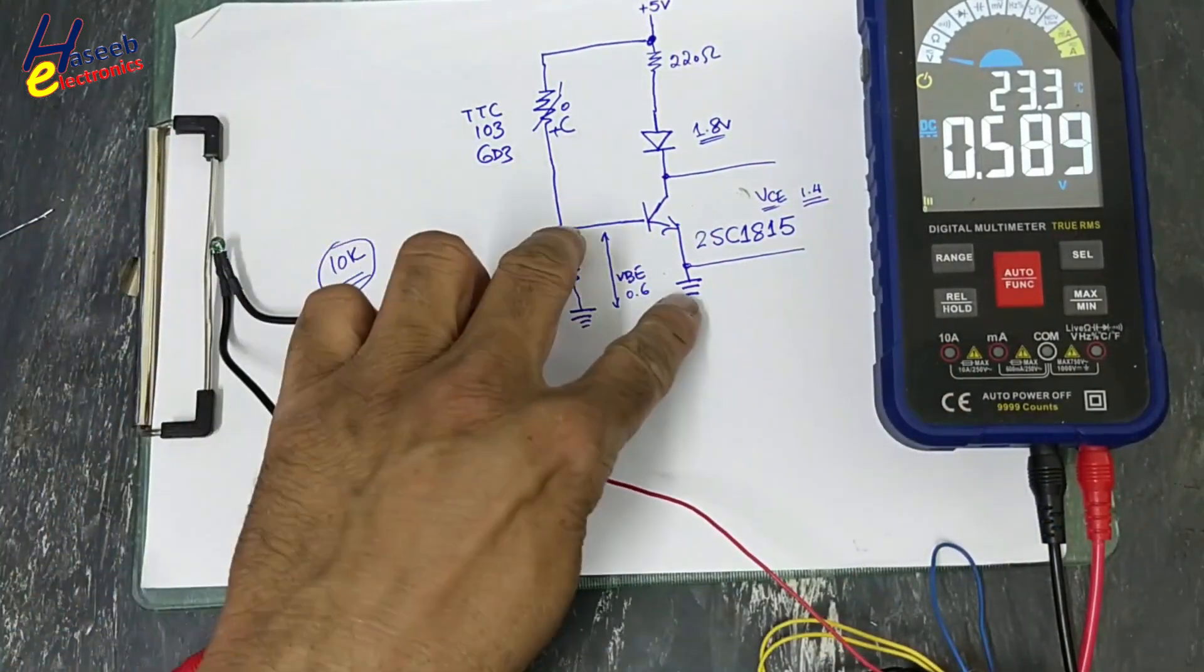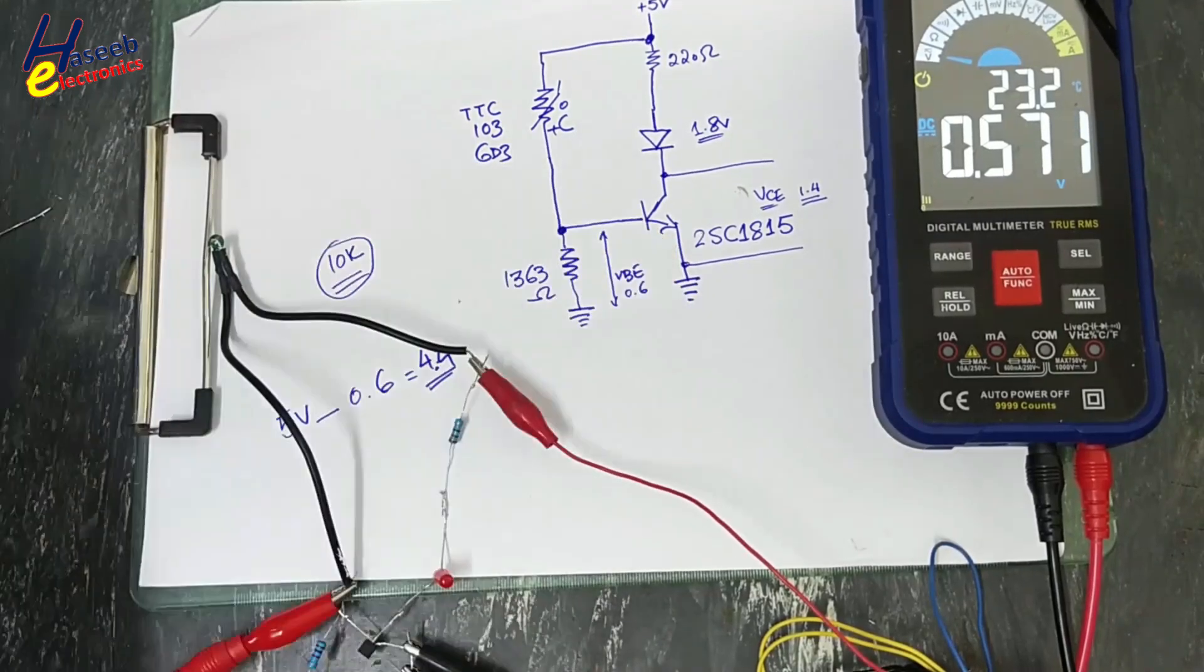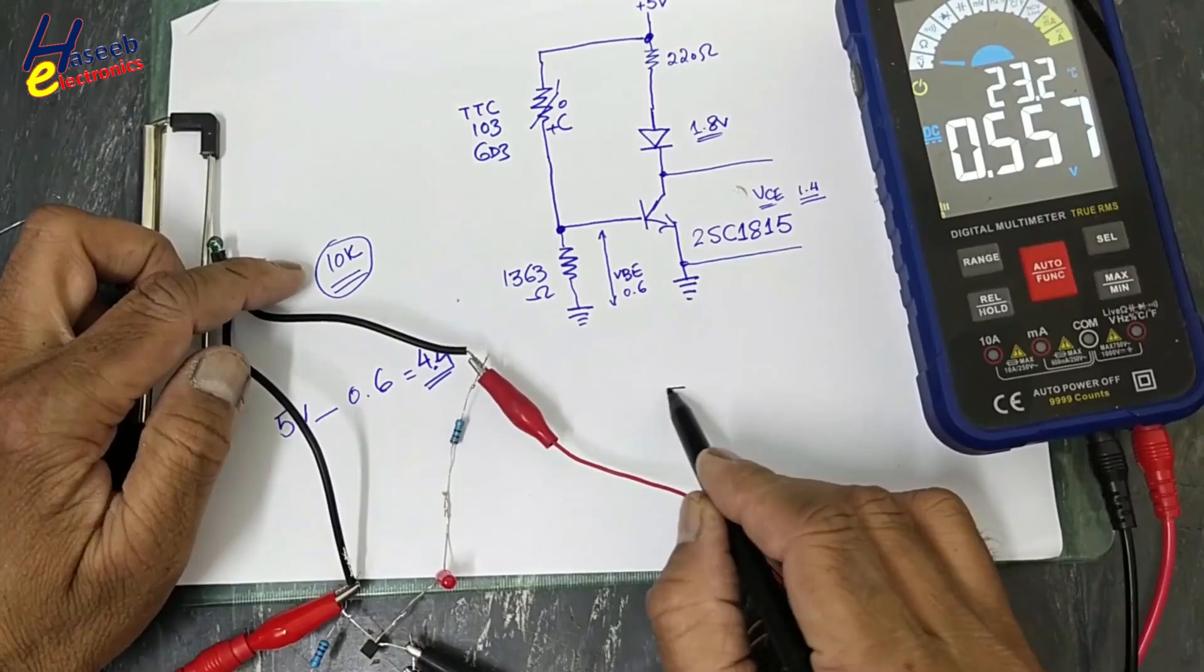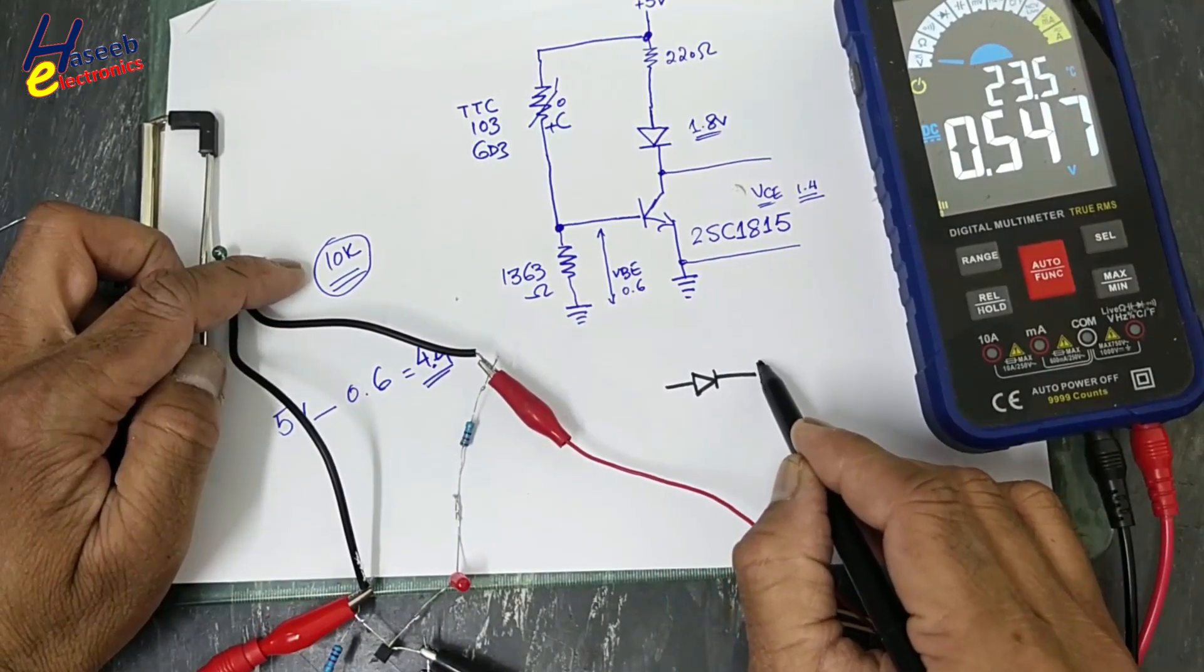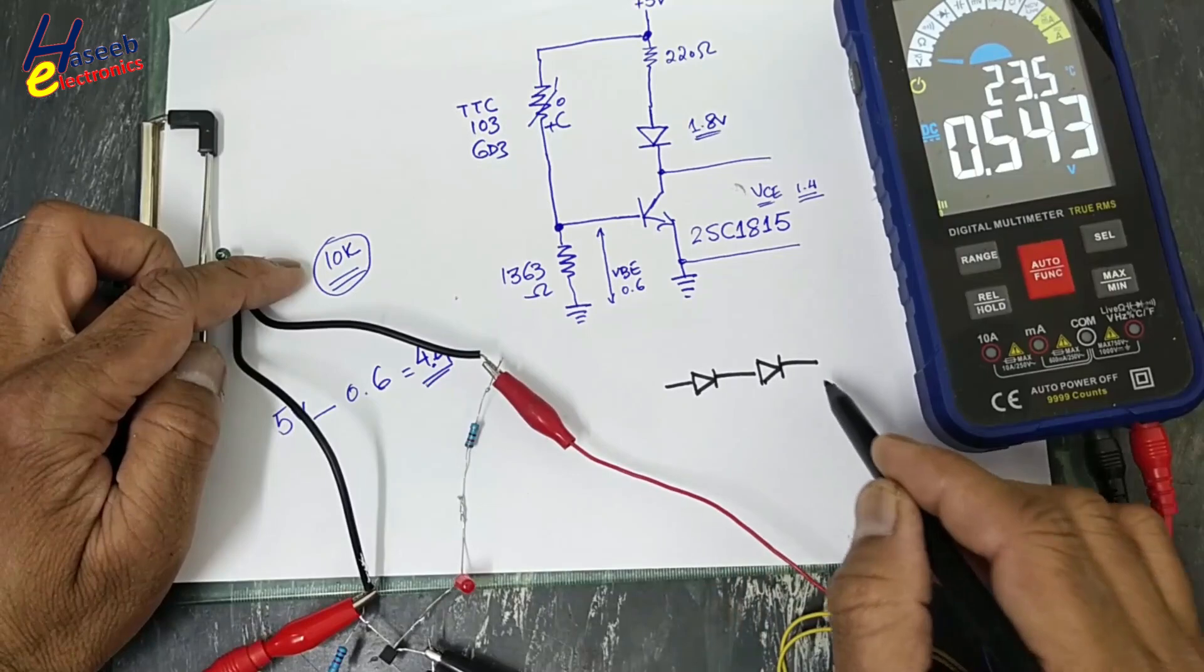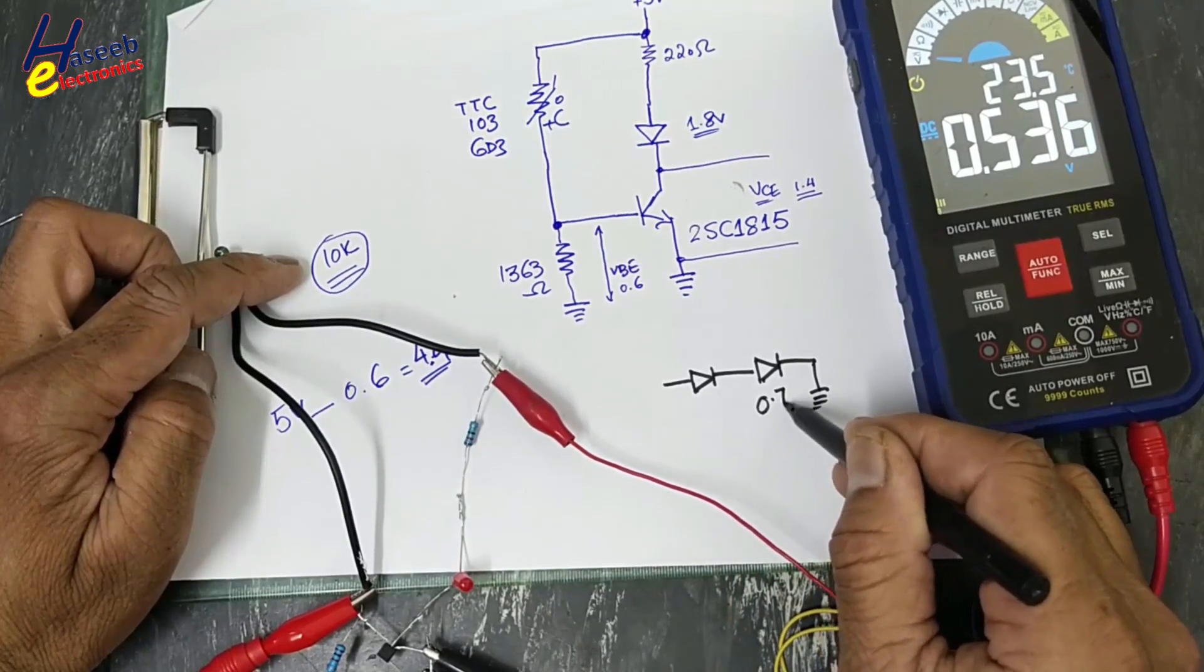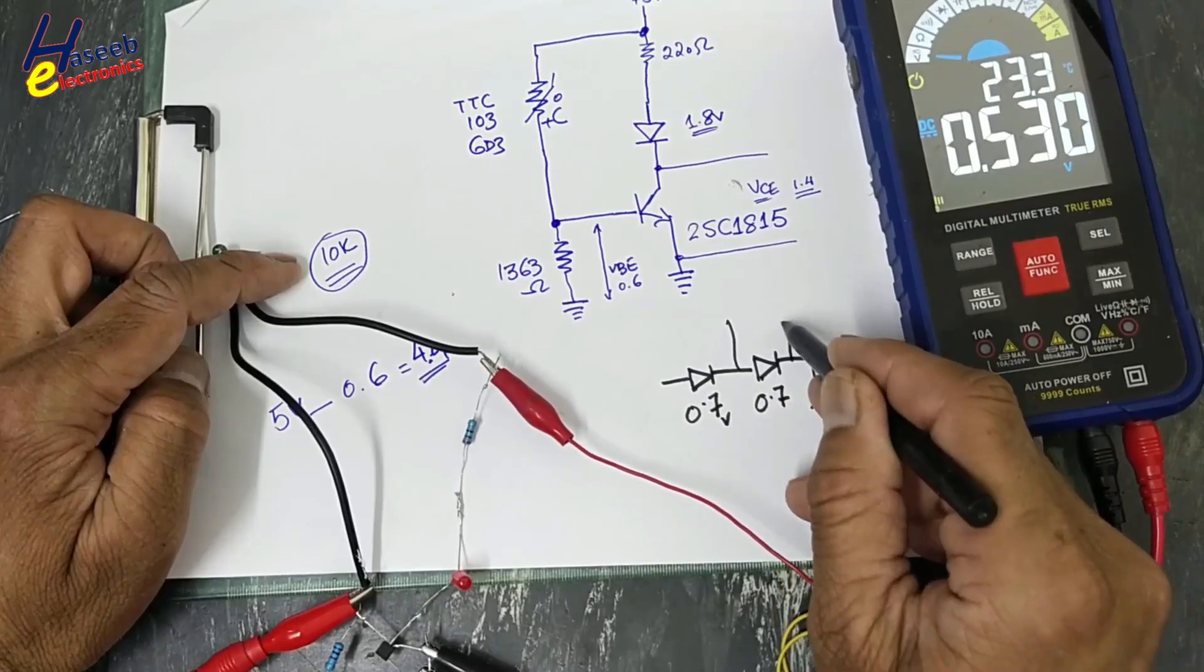Here we are considering 0.7 volts for one junction. If you connect two diodes in series, one diode and second diode, 0.7 volts for this one, 0.7 volts for this one, 0.7 for this one - this is VBE voltage base to emitter.